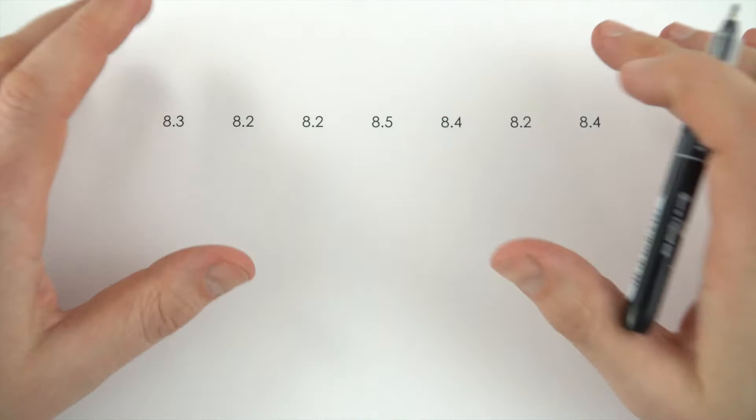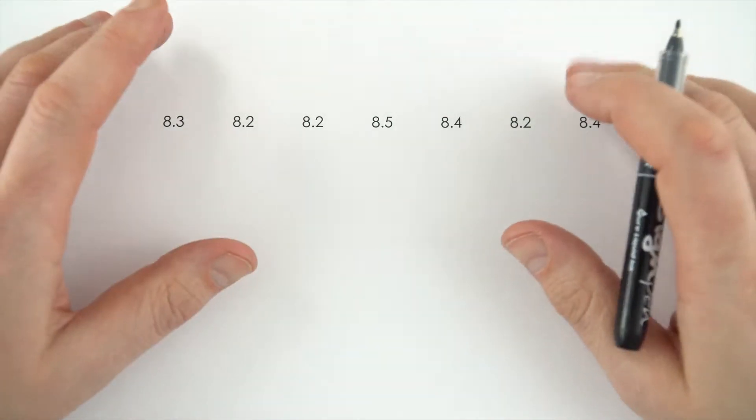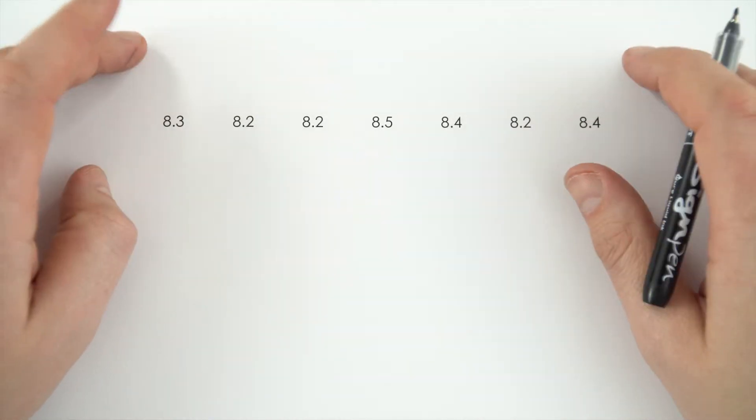Now most of the time when you're calculating averages it's going to be the mean that you're interested in, but occasionally in science you might need to work out the mode or the median as well.